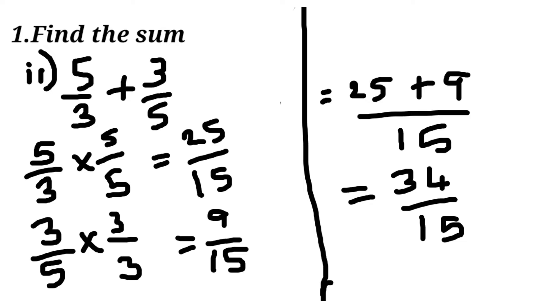Second sum: 5 by 3 plus 3 by 5. We take the LCM and the LCM is 15. We add the two numbers and we get the answer 34 by 15.